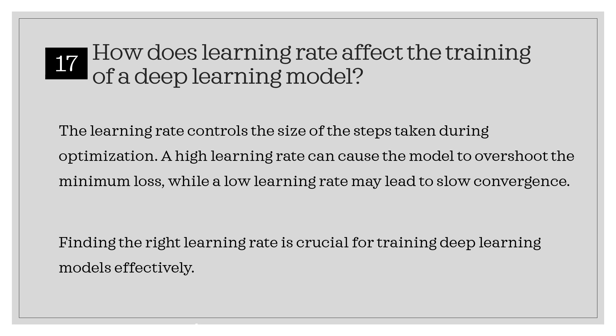How does learning rate affect the training of a deep learning model? The learning rate controls the size of the steps taken during optimization. A high learning rate can cause the model to overshoot the minimum loss, while a low learning rate may lead to slow convergence. Finding the right learning rate is crucial for training deep learning models effectively.